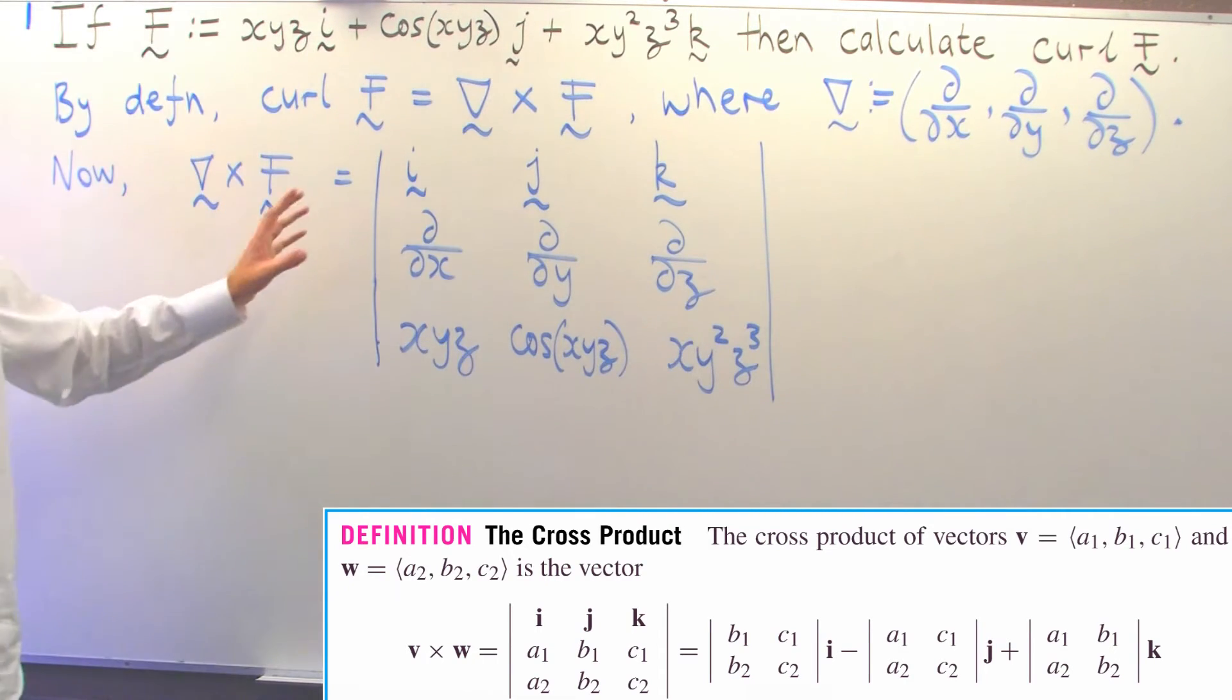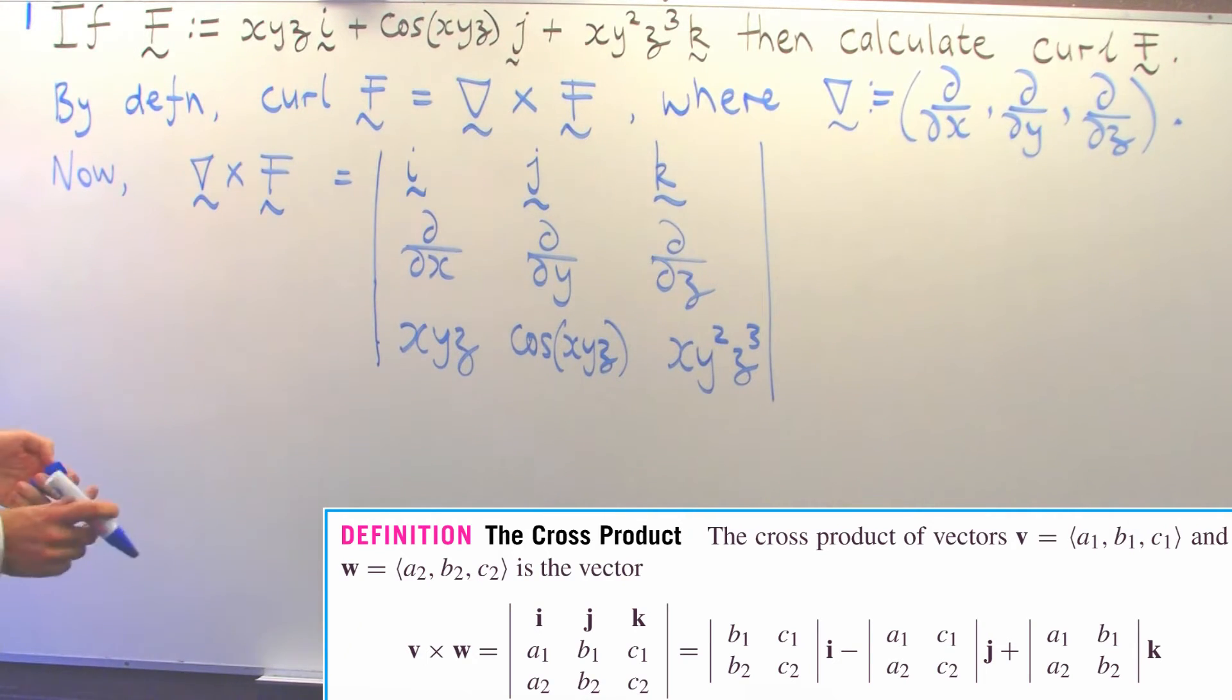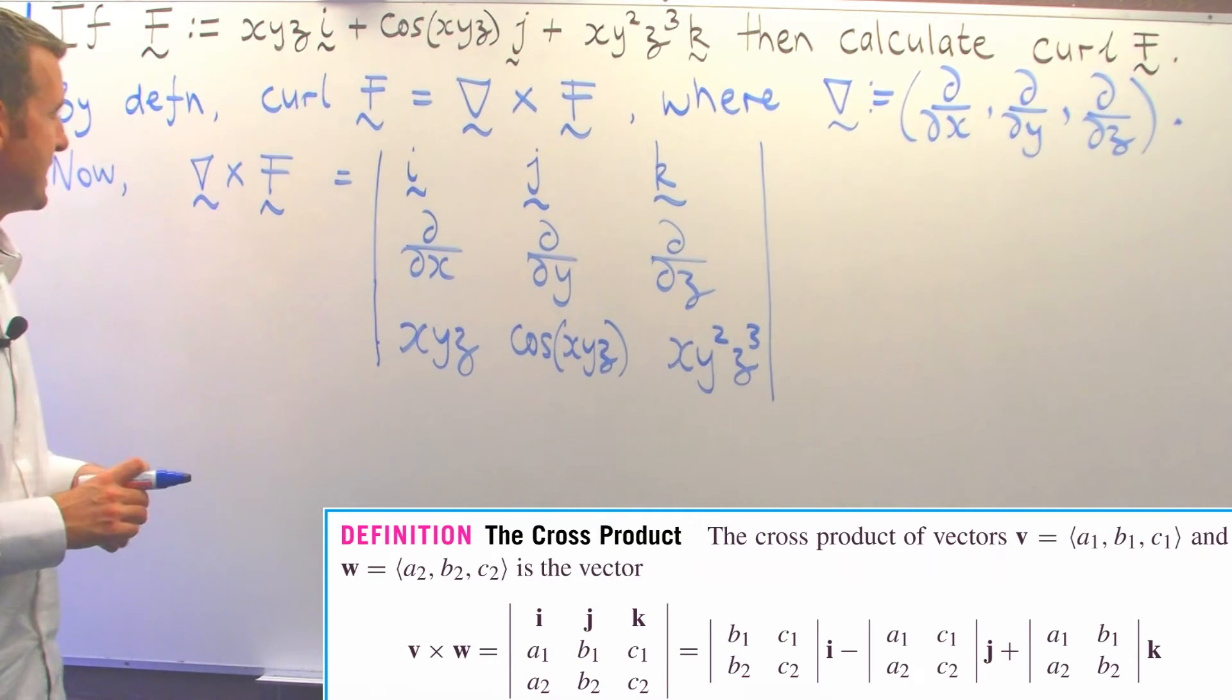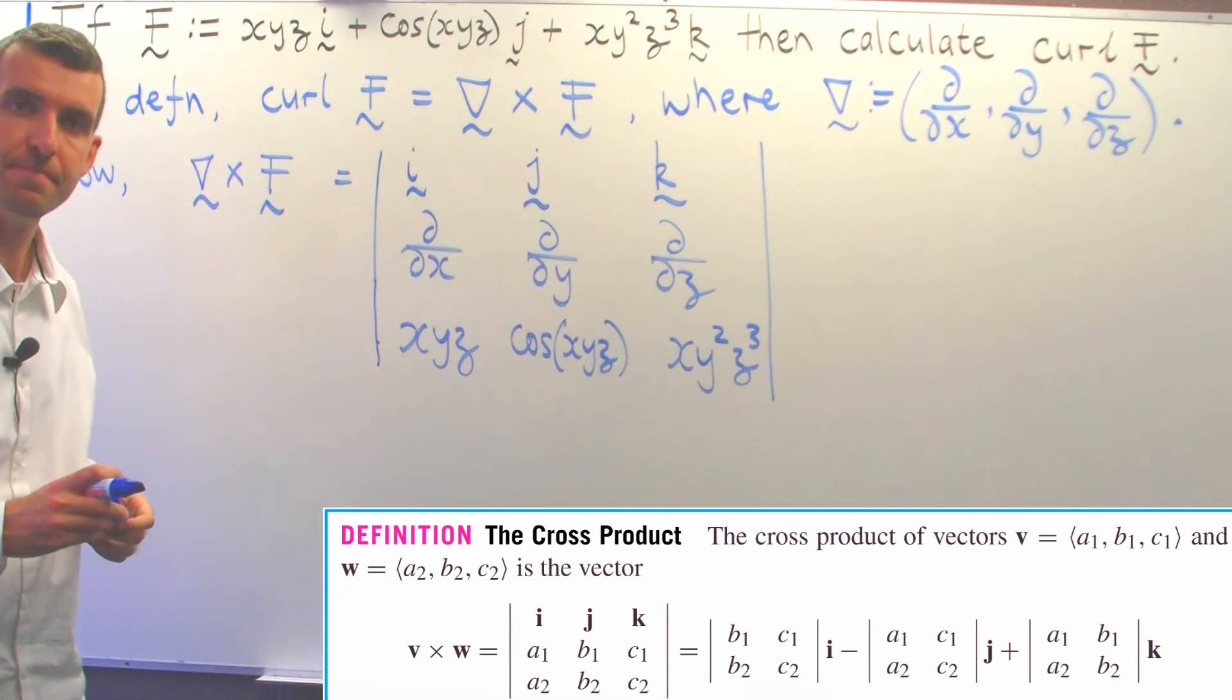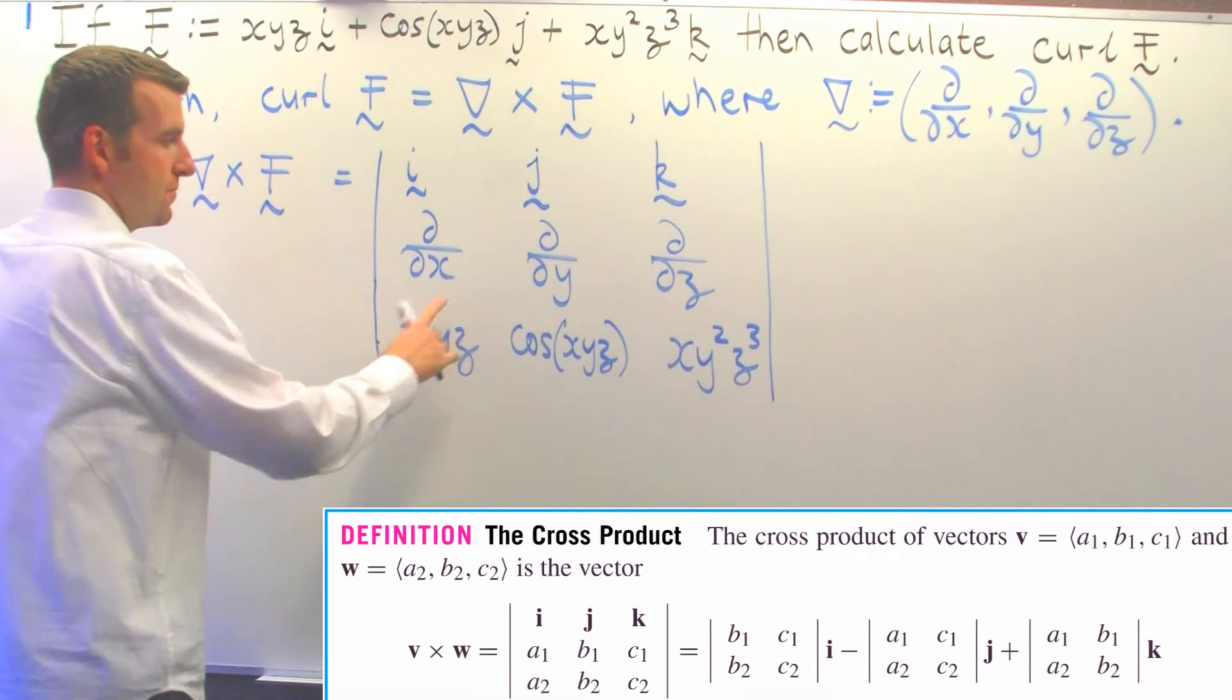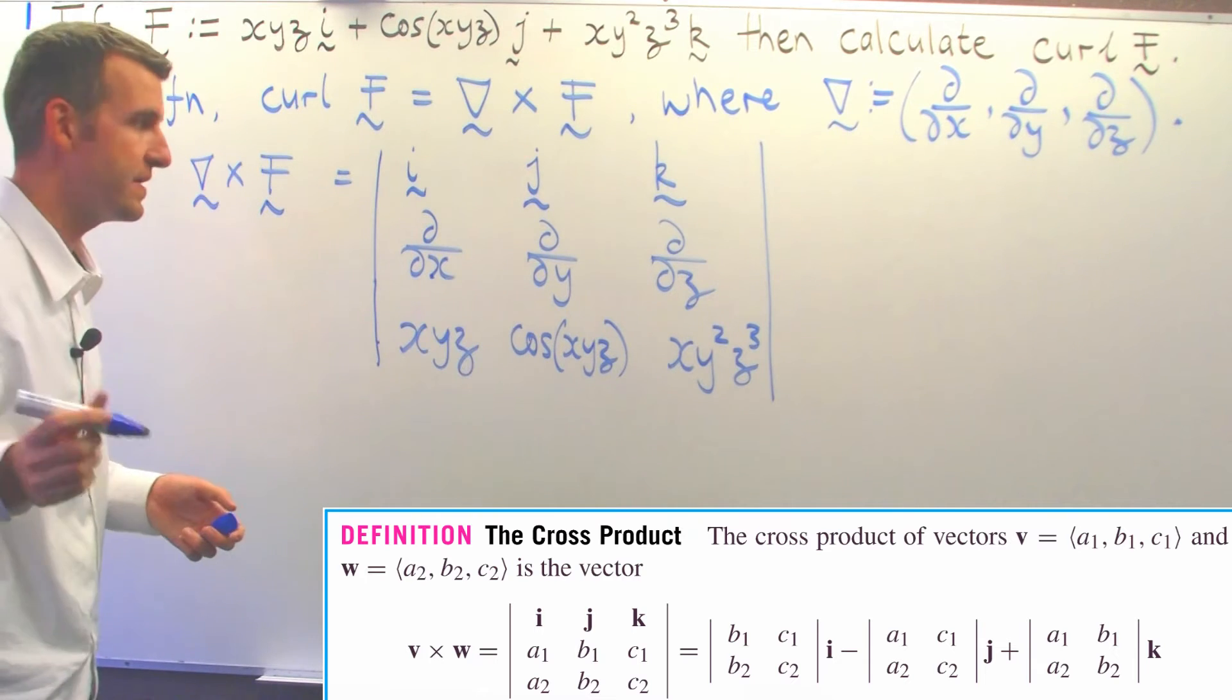We're going to expand this and produce a new vector field. With these three by three determinants, we essentially expand along the top row. Remember that we're not multiplying here; these differentials are operating on the various functions.